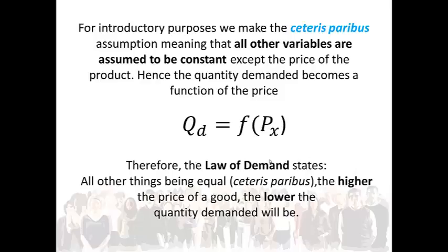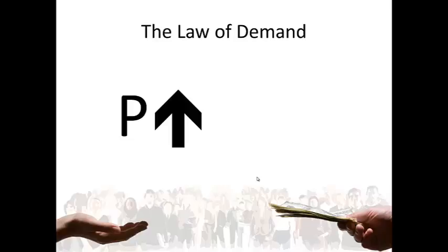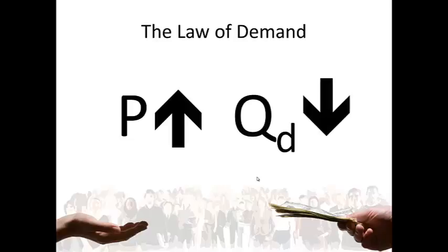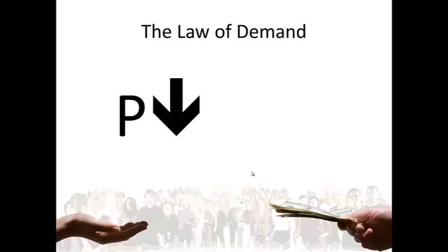Therefore, the law of demand states: all other things being equal, or ceteris paribus, the higher the price of a good, the lower the quantity demanded will be. The law of demand states that there is a negative or inverse relationship between the price of a product and the quantity demanded. A negative relationship can be identified by one variable increasing while the other variable decreases. For example, if the price of a product increases, then the quantity demanded will decrease. This is equally true if the price of a product decreases — the quantity demanded will increase.